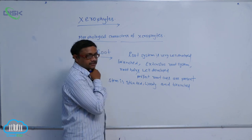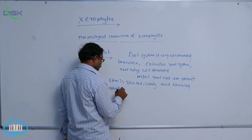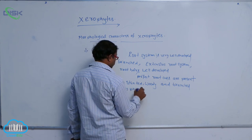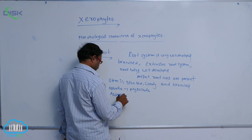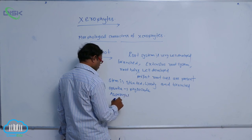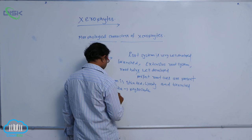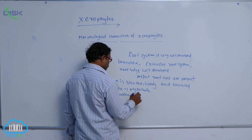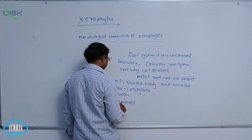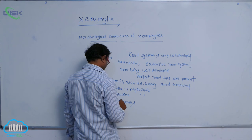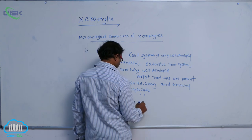The stem shows different modifications. For example, Opuntia, Phylloclade, and Asparagus; and Casuarina also has phylloclade. Both Ruscus and Casuarina are cladophylls.